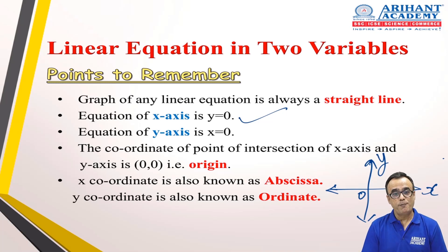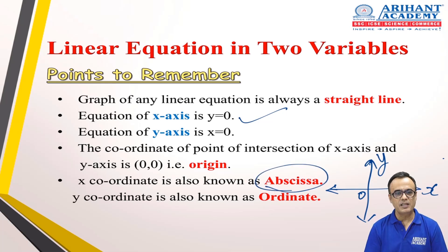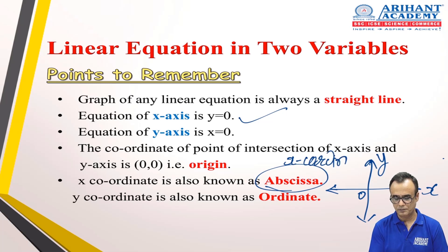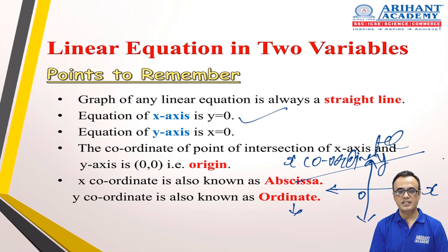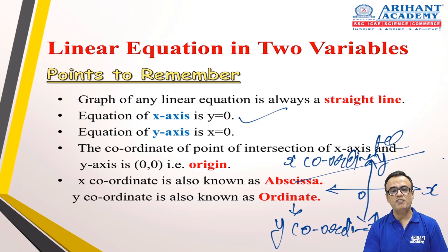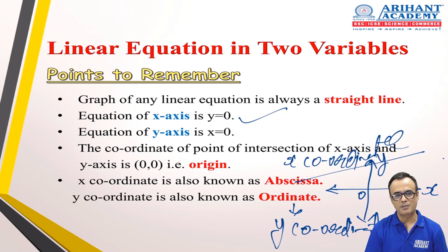The coordinate of the point of intersection of the x-axis and y-axis is the origin. The next point is very important — students get confused about the term 'abscissa.' Abscissa is nothing but your x-coordinate. And ordinate is nothing but your y-coordinate. You have to be well-versed with these terminologies because certain questions use these terms, and if you're not aware, you lose a mark in this MCQ-based exam.